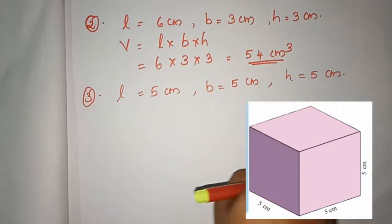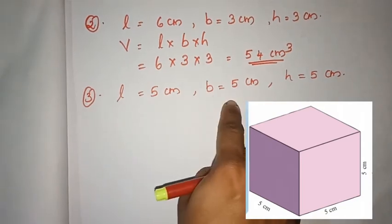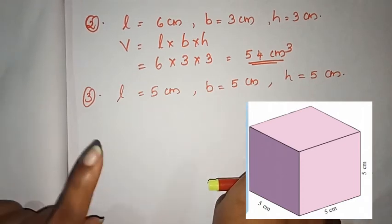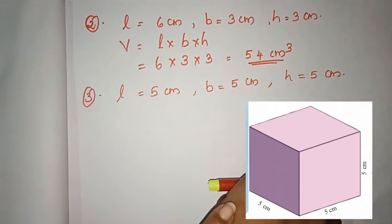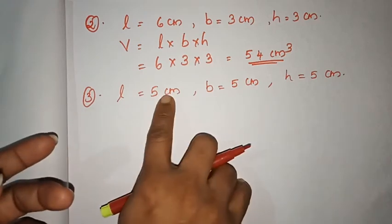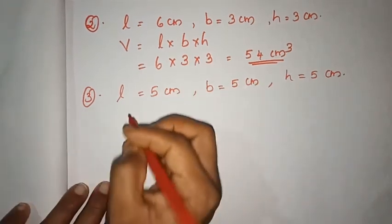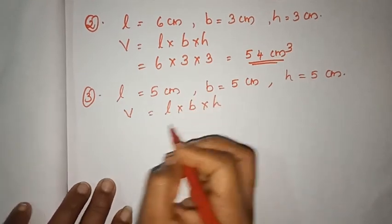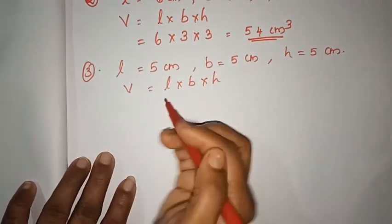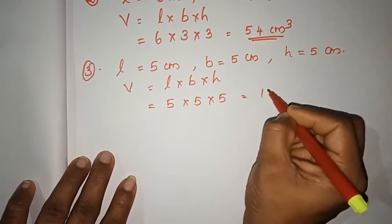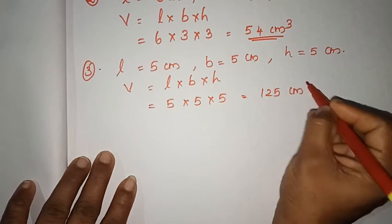This is the first rectangular block where length, breadth and height are all 5 cm — it is a cube. Volume is equal to length × breadth × height, that is 5 × 5 × 5. We get 125 cm³.